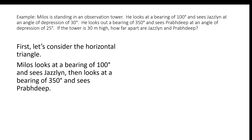For example, suppose Milos is standing in an observation tower. He looks out at a bearing of 100 degrees and sees Jazlin at an angle of depression of 30 degrees. If the tower is 30 meters high, we would like to know how far apart are Jazlin and Prabhdeep. First, let's consider the horizontal triangle. Milos looks at a bearing of 100 degrees and sees Jazlin, and looks at a bearing of 350 degrees and sees Prabhdeep.